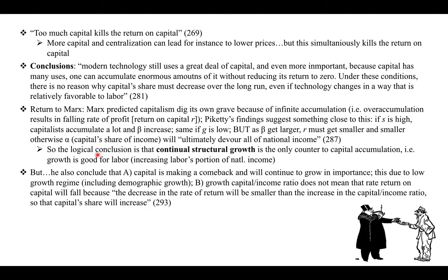This leads to the logical conclusion that continual structural growth is the only counter to capital accumulation — growth is good for labor, increasing labor's portion of national income. Though this could be problematized because under capitalism, continual growth has very negative consequences if we consider its effects on the earth. He concludes that A) capital is making a comeback and will continue to grow in importance due to low growth regime including demographic growth; and B) the growth in capital-income ratio does not mean the rate of return on capital will fall, because the decrease in the rate of return will be smaller than the increase in the capital-to-income ratio, so capital's share will increase.